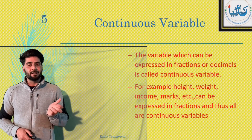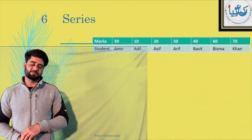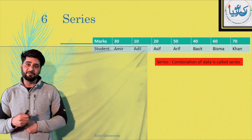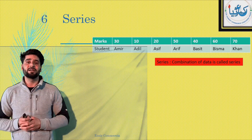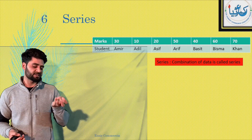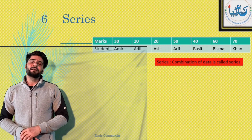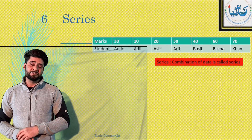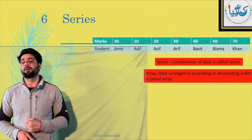Now what is a series? That's another term. A combination of data is called a series. For example, marks here are 30, 10, 20, 50, 40, 60, and 70 — if we combine them, it becomes a series. If we arrange this data in ascending or descending order, we call it an Array. For example, 10, 20, 30, 40, 50, 60 and 70 — this is what you call an Array.